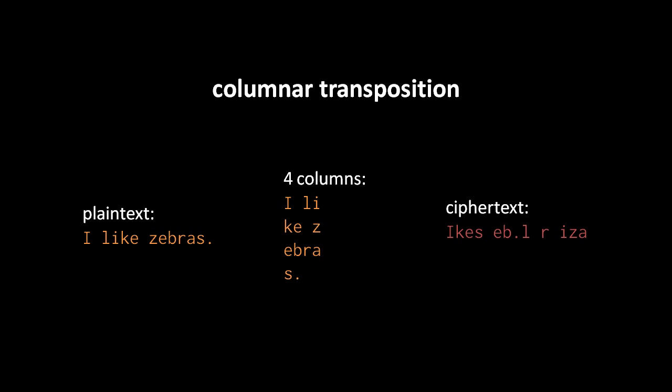Perhaps the simplest kind of transposition is columnar transposition. So-called because it's as if we take our message and write it in a set number of columns. Here four columns, and then we get our ciphertext by reading down each column. So our plaintext, I like zebras, we write that out in four columns, and then we simply read down each column in turn. So we go IKES space EB period L space R space IZA space.